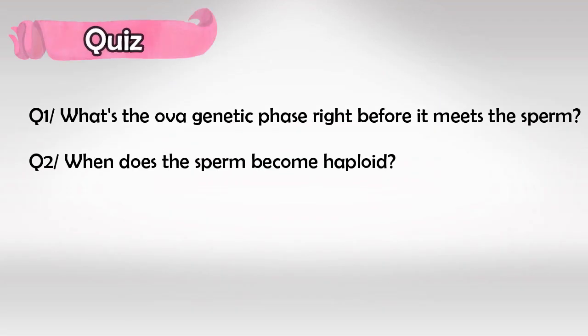If you understood all the points well, you should be able to answer this question. What is the genetic phase of the ovum right before it meets the sperm? We're talking about ovulation, which is the secondary oocyte. And when does the sperm become haploid?